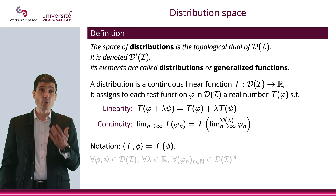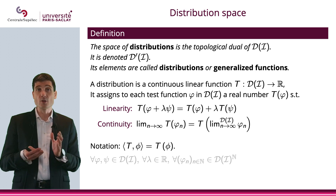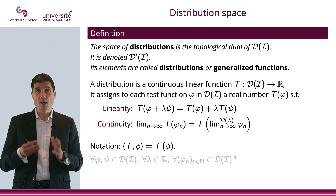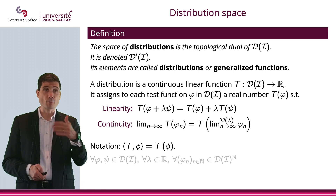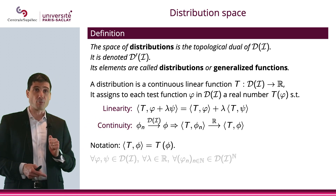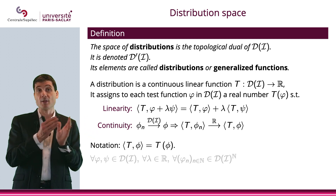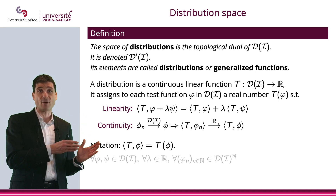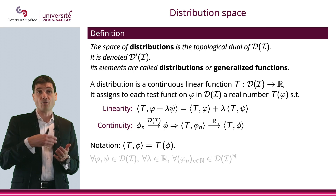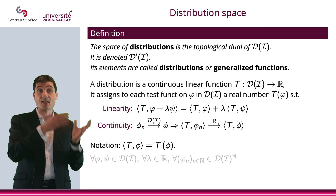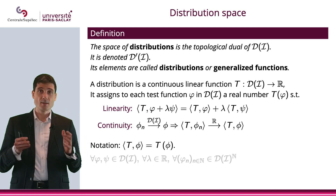We will use a bracket notation: instead of T(φ), we will most often use ⟨T, φ⟩. Let me rewrite what we just wrote with this bracket notation. Linearity: ⟨T, φ + λψ⟩ = ⟨T, φ⟩ + λ⟨T, ψ⟩. And if φₙ converges to φ in D, then ⟨T, φₙ⟩ converges to ⟨T, φ⟩ in ℝ.